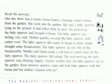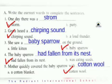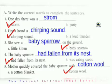Now we are going to take the exercise. Write the correct word to complete the sentence. You have to write the answers from the story. One day there was a storm — so in the blank you have to mention S-T-O-R-M, storm. Then Gita heard a chirping sound — C-H-I-R-P-I-N-G, sound S-O-U-N-D, chirping sound.